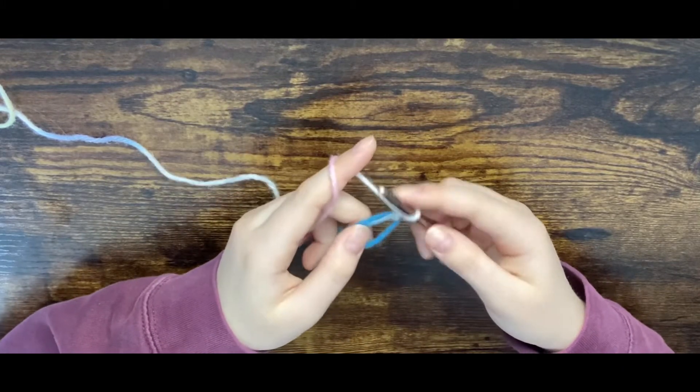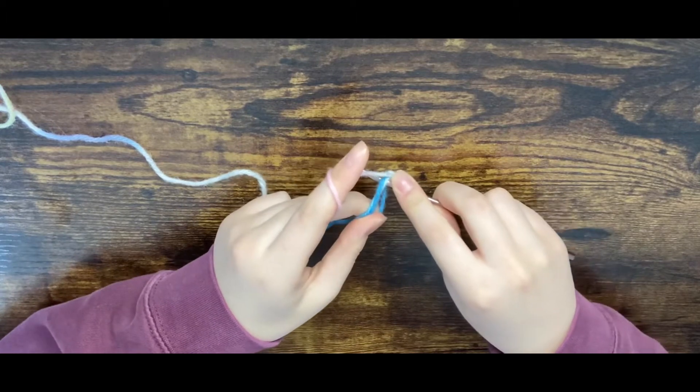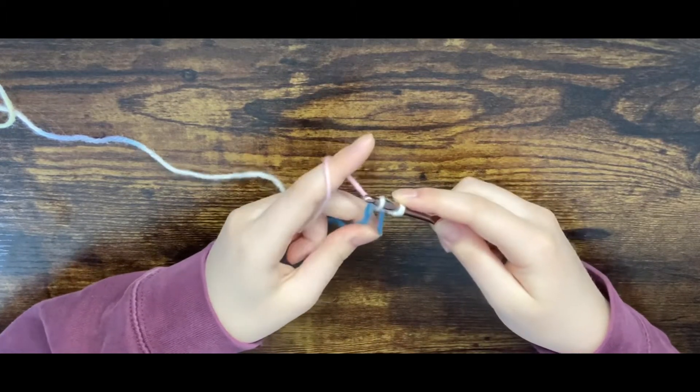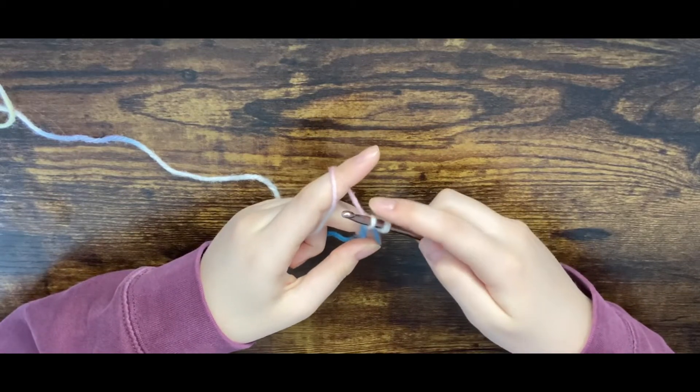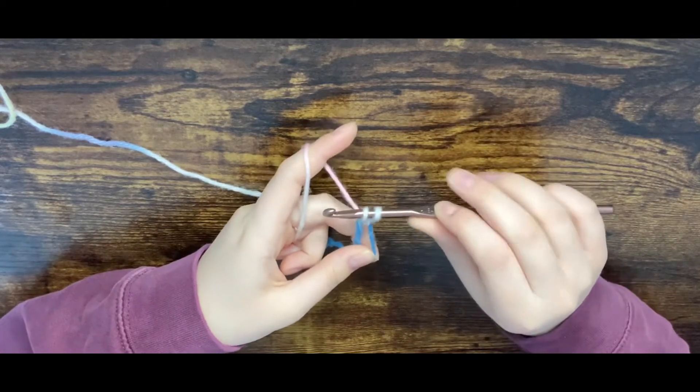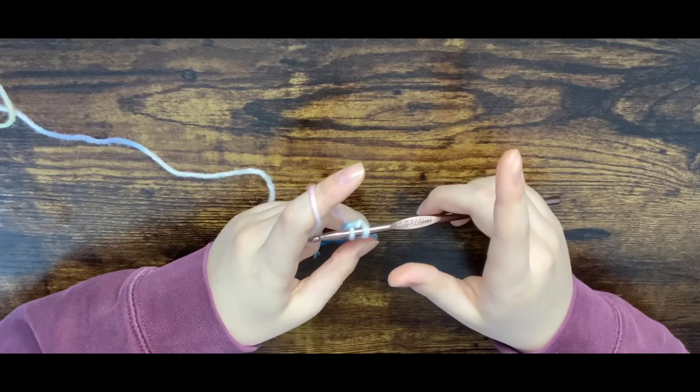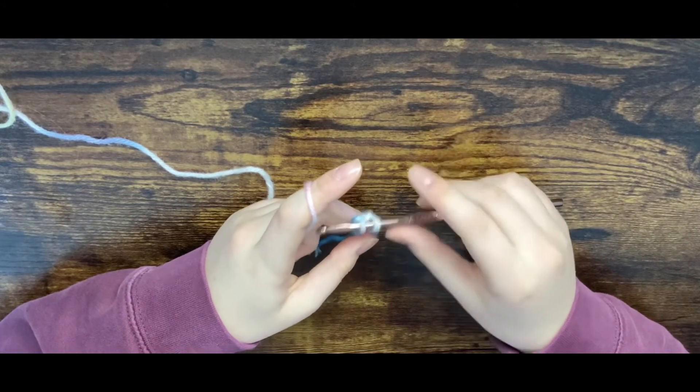To do that, you're just going to insert your hook into the loop and then yarn over and pull through. It's a little weird because there's nothing to really go through, it's just a loop of thread. Then you're going to have two loops on your hook. This is for single crochet but you can do half double crochet, double crochet, and treble crochet.